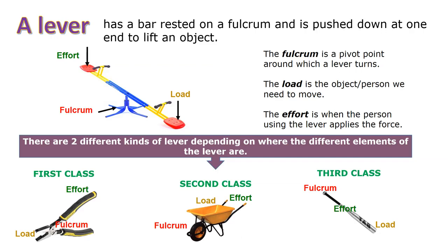A lever has a bar rested on a fulcrum and is pushed down at one end to lift an object. The fulcrum is a pivot point around which a lever turns. The load is the object or person we need to move. The effort is the force the person using the lever applies.